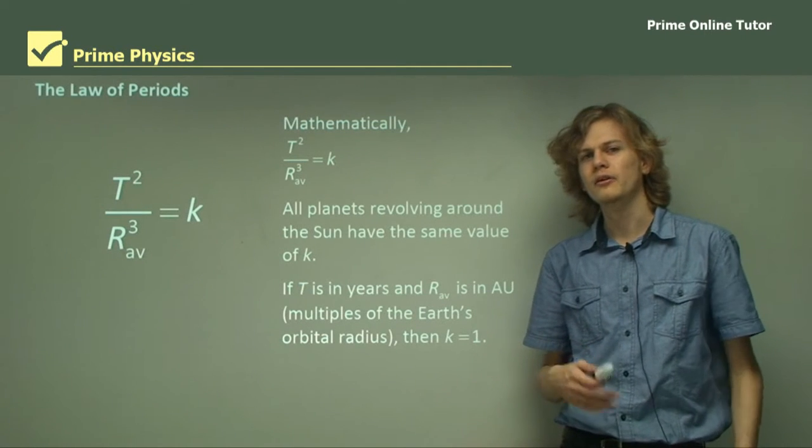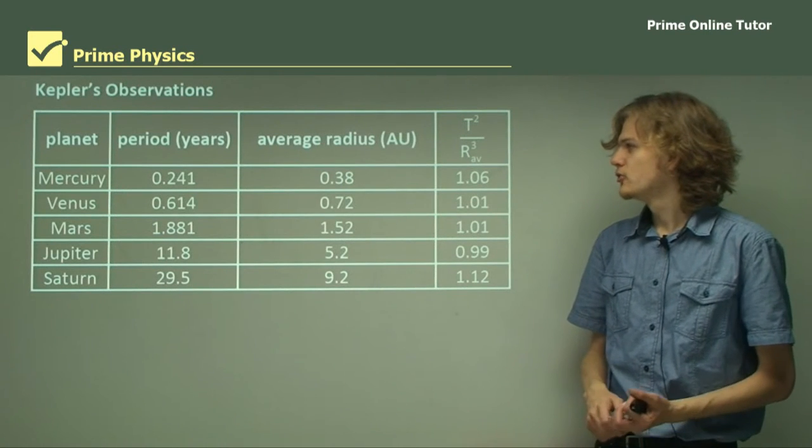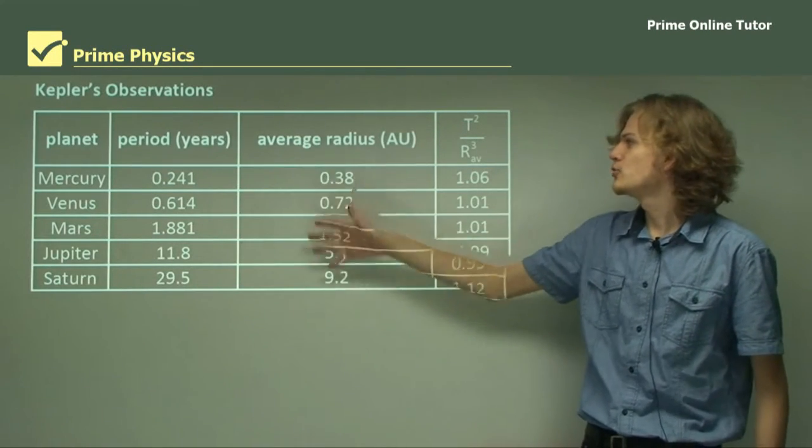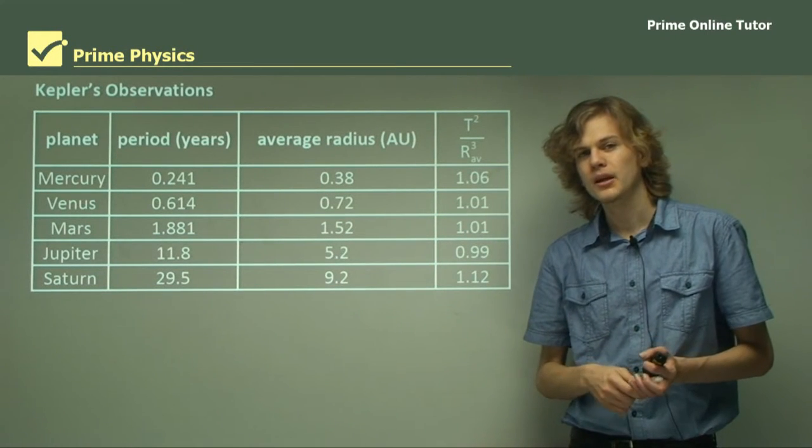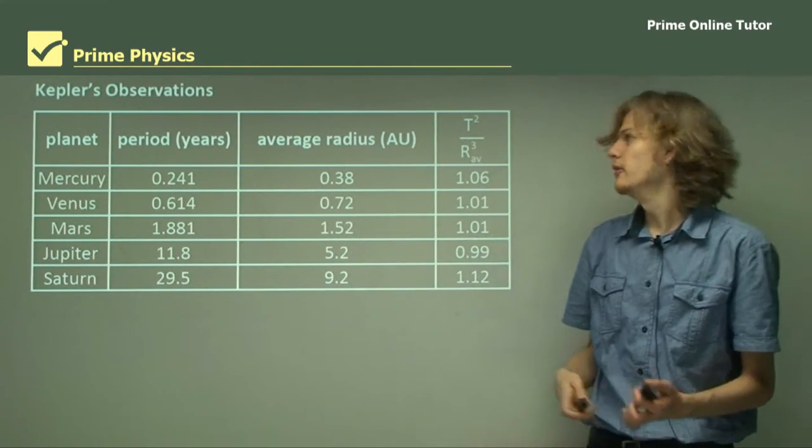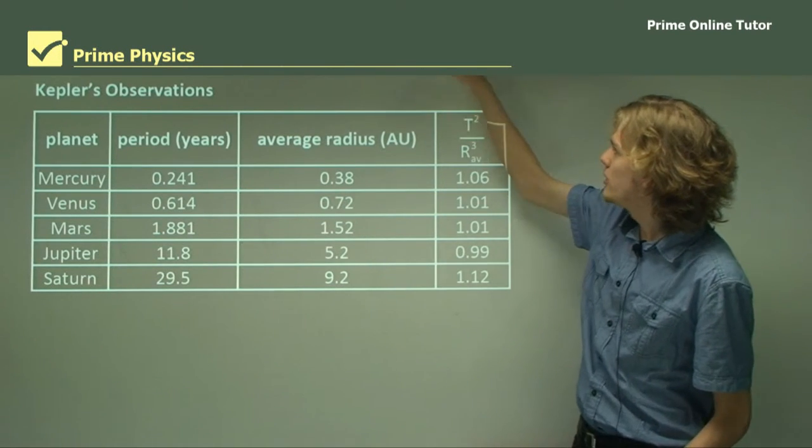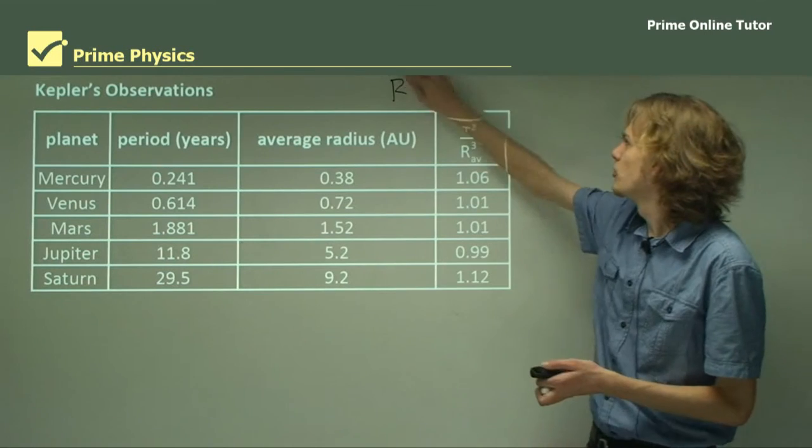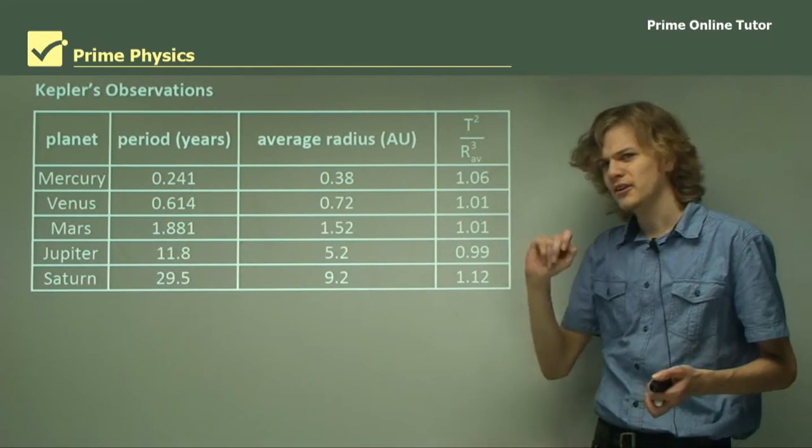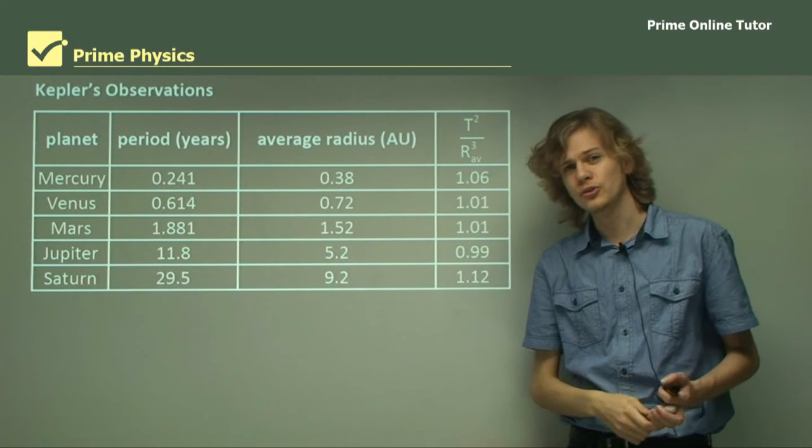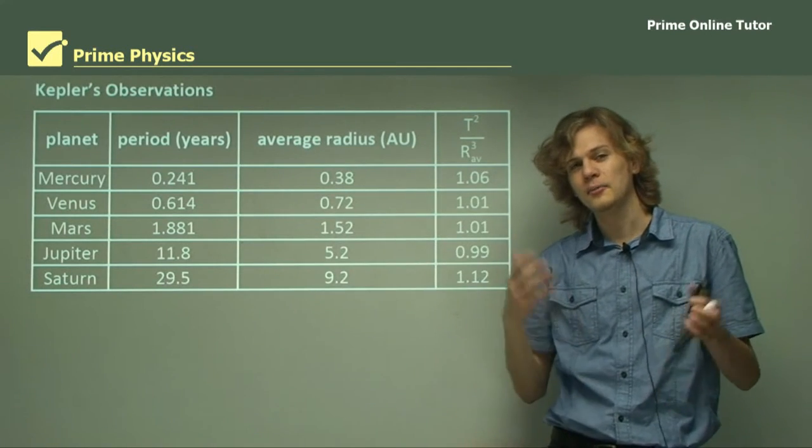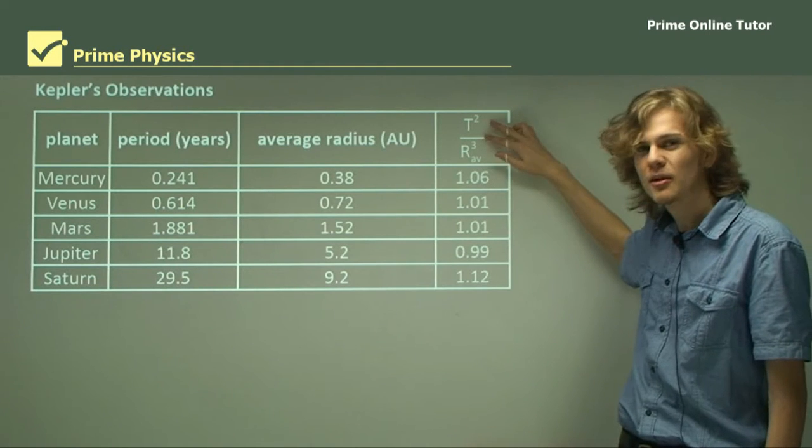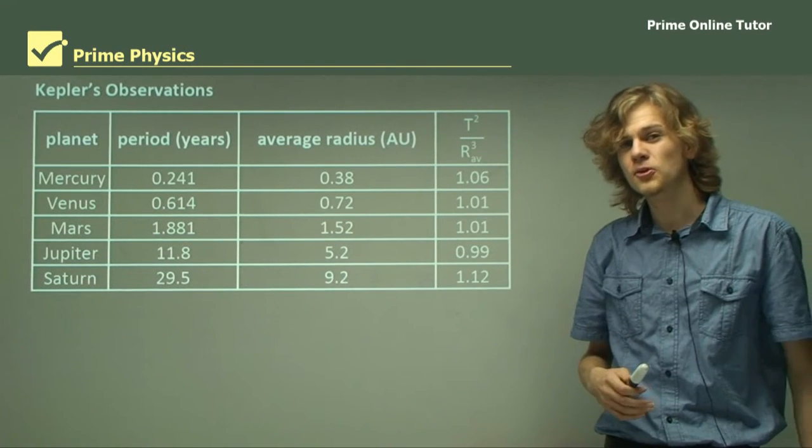We have a table here of the various different radii and periods of different planets. We have the five different planets that were discovered at the time, and we have their period in years and their average radius in astronomical units, which is exactly what we need to get a K of 1. In each case, if we take the period and we square it, divide by R cubed, we arrive at this number that's on the rightmost column. Looking at these numbers for each of the different planets: 1.06, 1.01, 1.01, 0.99, and 1.12. This is the actual data that Kepler used for his observations, and you can see that pretty much every number here is almost exactly 1. This seems to say that this number, T²/R³, is a constant for every planet in our solar system that was discovered at the time.